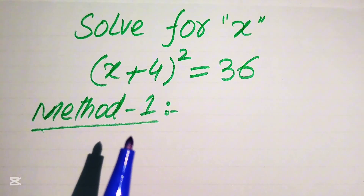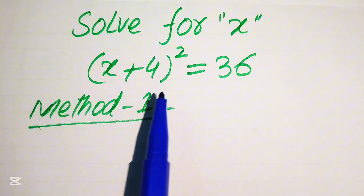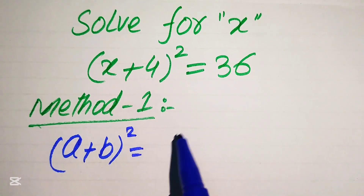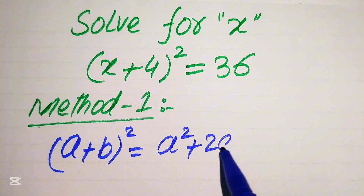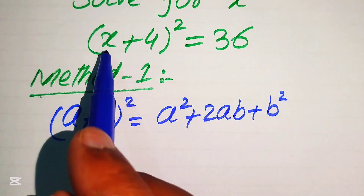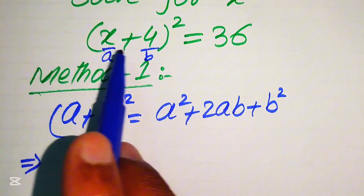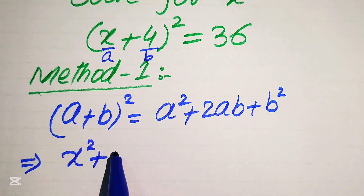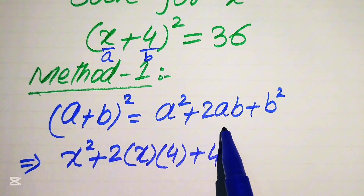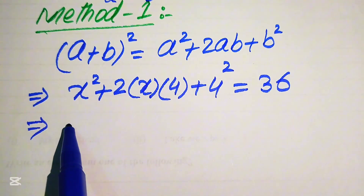We will solve this using two methods. In the first method, we focus on the left-hand side. We have (x + 4)², so we apply the algebraic formula: (a + b)² = a² + 2ab + b². Here, a is x and b is 4, so we expand accordingly, giving us x² + 2(x)(4) + 4² = 36.